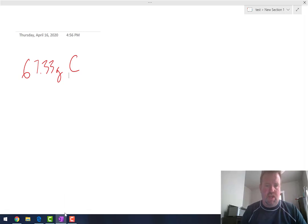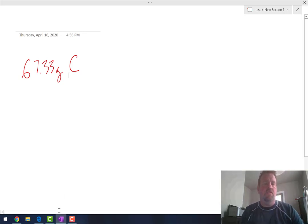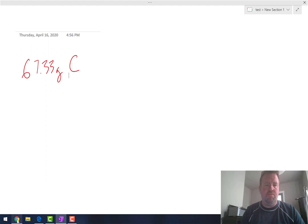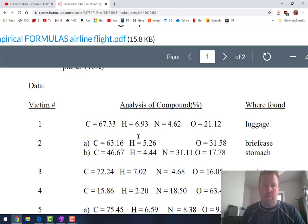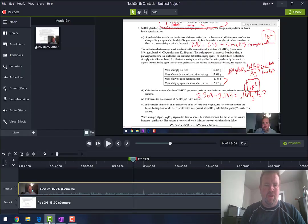So on every one of these, that's how we want to start, is by converting those percentages to grams, simply by changing the percent to the gram sign. So hydrogen is 6.93.